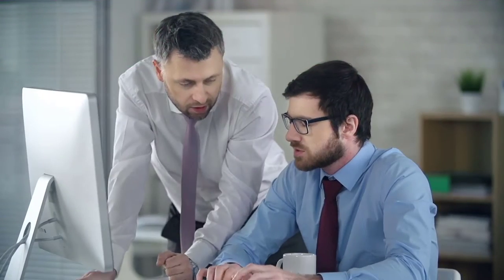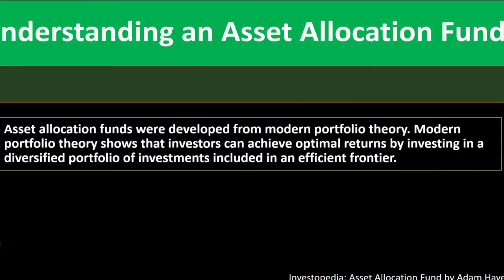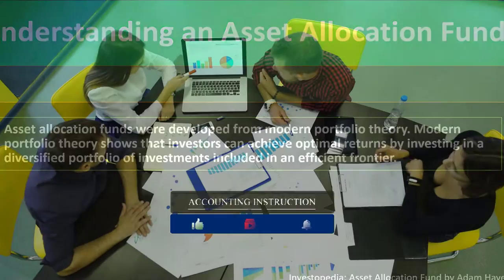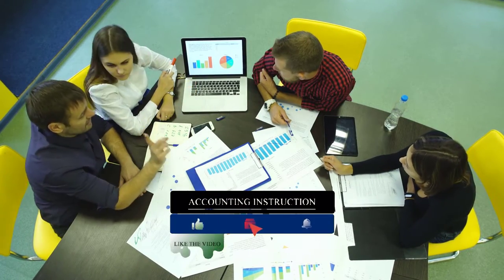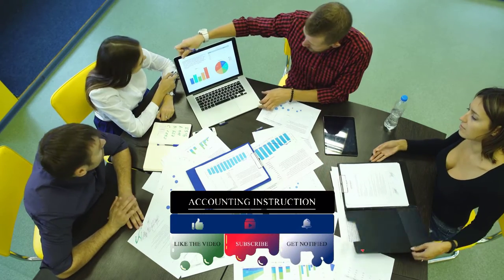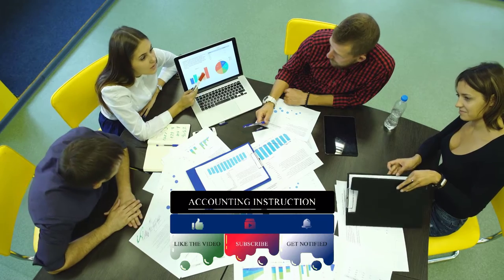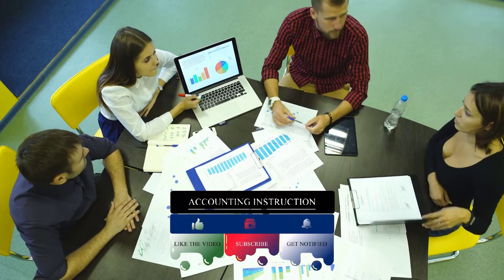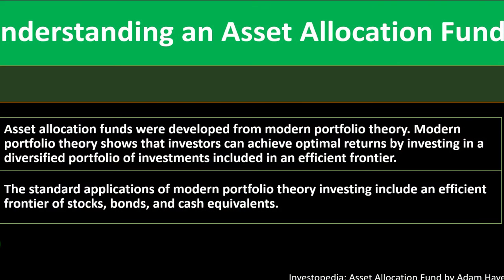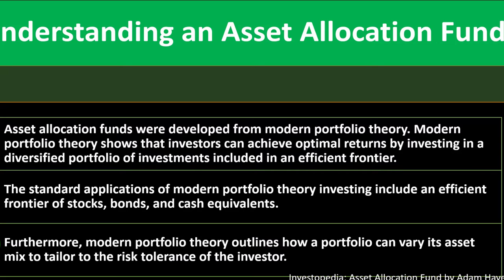Understanding an asset allocation fund: asset allocation funds were developed from modern portfolio theory, which considers the mix of investments and the time horizon. Modern portfolio theory shows that investors can achieve optimal returns by investing in a diversified portfolio including an efficient frontier. The standard applications include an efficient frontier of stocks, bonds, and cash equivalents.